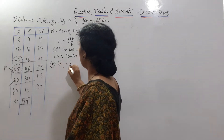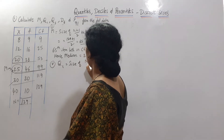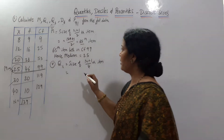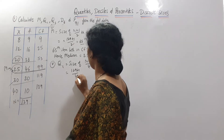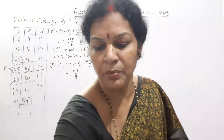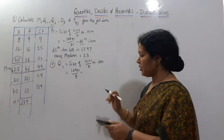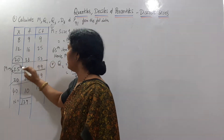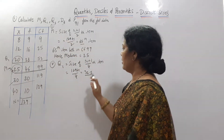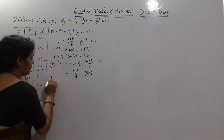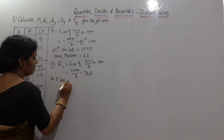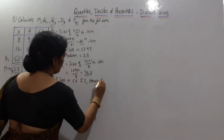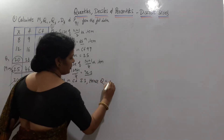Q1 is equal to the size of (n+1)/4 th item. N is 129, so 129+1=130, divided by 4 is 32.5. The 32.5th item lies in cumulative frequency 53. Hence Q1 is equal to 20.